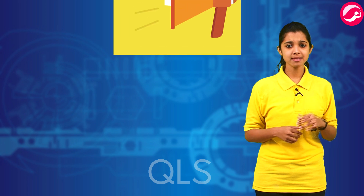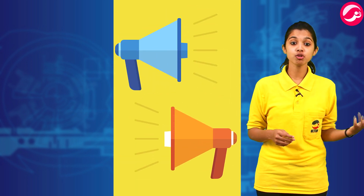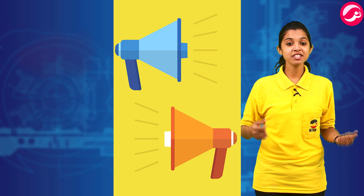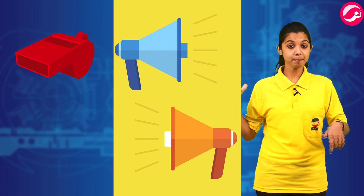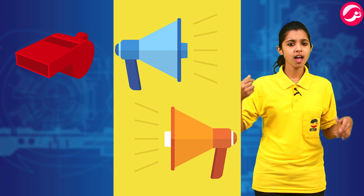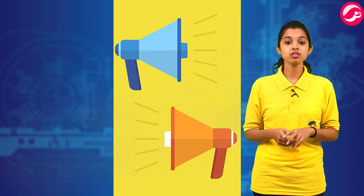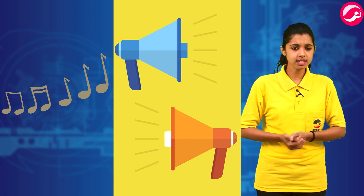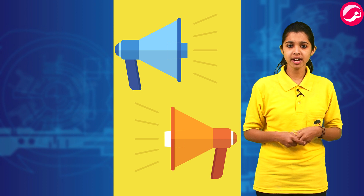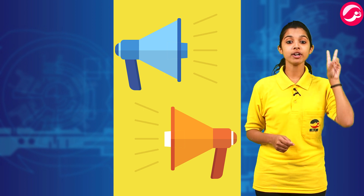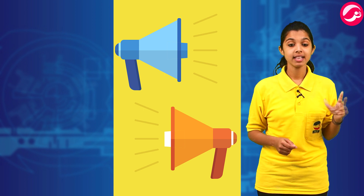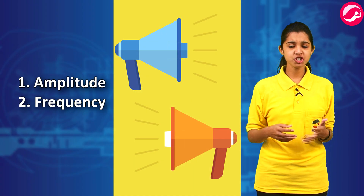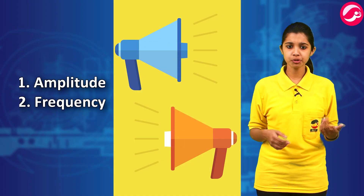You can recognize many familiar sounds without seeing the objects producing them. These sounds must be different to enable you to recognize them. Have you ever thought what factors make them different? There are two important properties of sound: amplitude and frequency. So we can differentiate sounds on the basis of their amplitude and frequency.